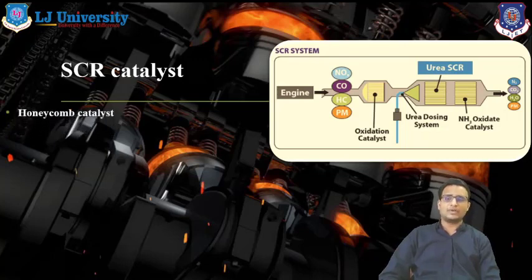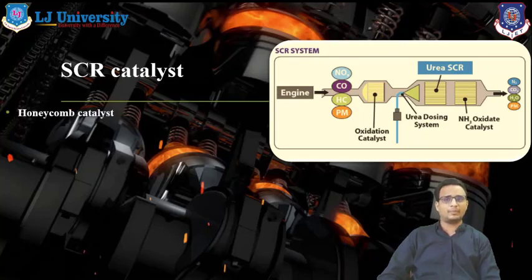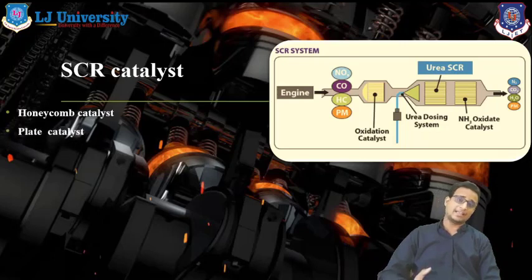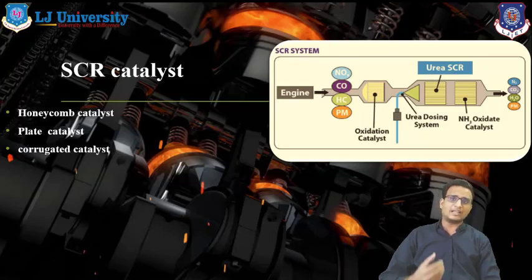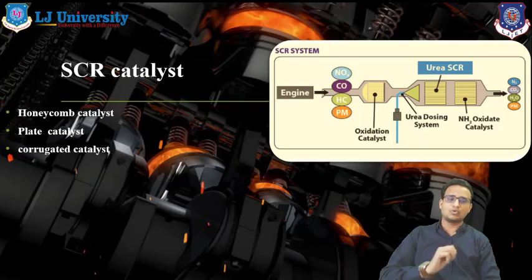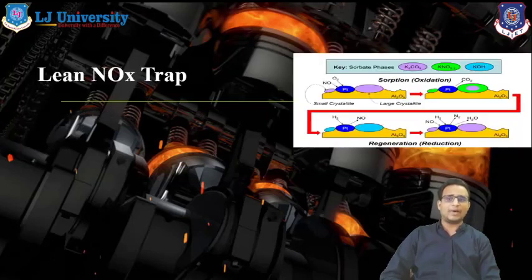There are different types of catalysts used in SCR. The first is the honeycomb catalyst, where platinum, palladium, rhodium, and titanium are arranged in honeycomb structures. We can also use plate-type catalyst and corrugated catalyst in the selective catalyst reduction range. The basic principle of all these catalysts is to convert NOx particles into N2 as well as H2O.